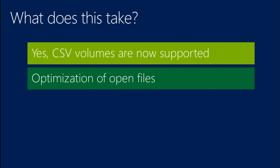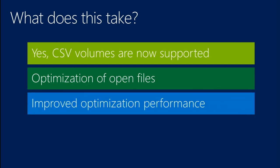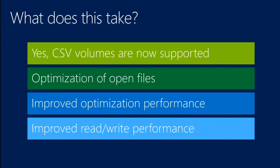Number two: we have to be able to optimize the file while it's open. As Gary just showed, that's part of what we're doing — we'll walk through under the covers what happens during that process. Third, we need to have enough performance. We had to improve optimization performance so the optimization job itself didn't have to only run at night or on weekends. Optimization can happen real-time or near real-time and keep up with the I/O load for a VDI deployment. And we had to improve the read-write performance to handle the operational characteristics needed to run VDI.